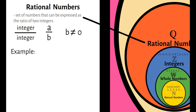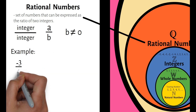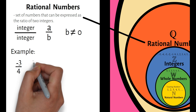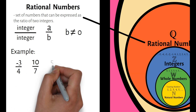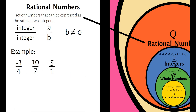Example: negative 3 over 4, 10 over 7, and 5 over 1. So ibig sabihin niyan, lahat ng integers ay rational numbers since pwede natin silang lagyan ng denominator na 1 na hindi binabago ang value nila. In that case, na-express natin sila as fractions.